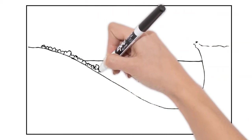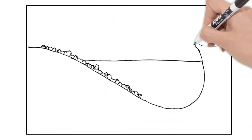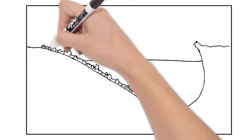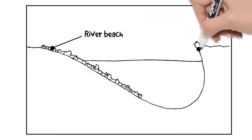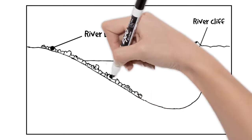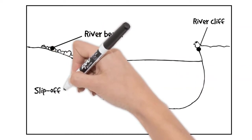On the shallow side we're going to draw in a sediment deposit on a slip-off slope and we're going to label that sediment as a river beach where it's exposed above the water level. On the outside of the meander we're going to label the steep river cliff. Also on the inside we have a slip-off slope.